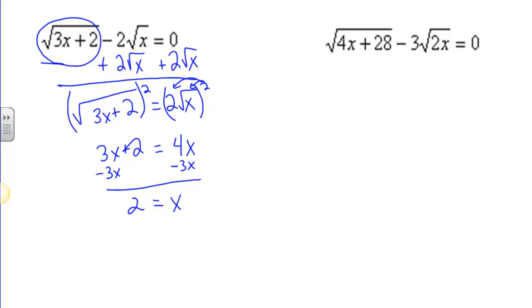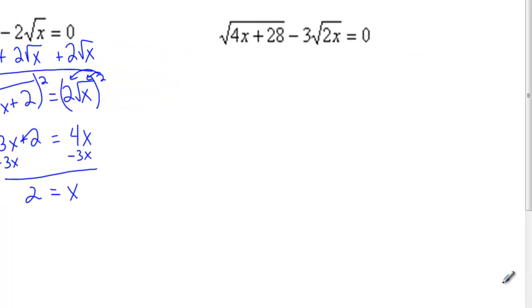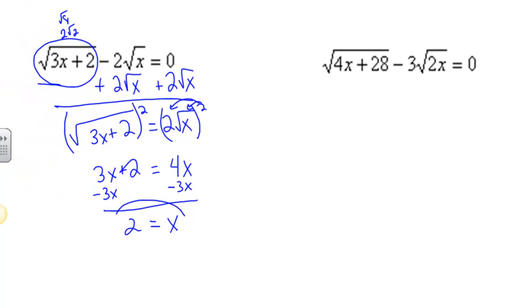If I subtract 3x from both sides, then I get 2 equals x. Plug it back in: 3 times 2 is 6 plus 2 is the square root of 8. Plug in 2 on the other side and I get 2 radical 2. The square root of 8 is 2 radical 2, and 2 radical 2 minus 2 radical 2 is 0. So that checks out — there's our answer.